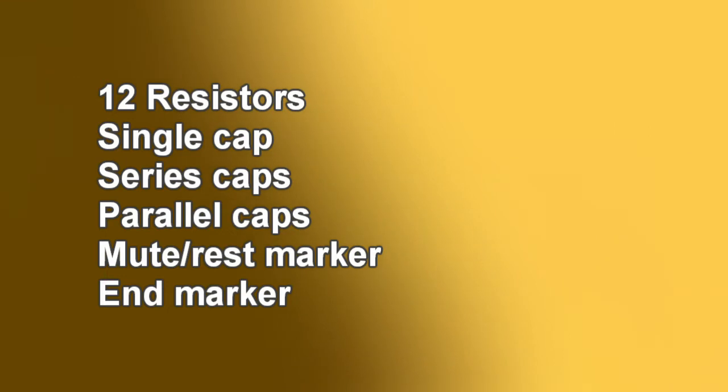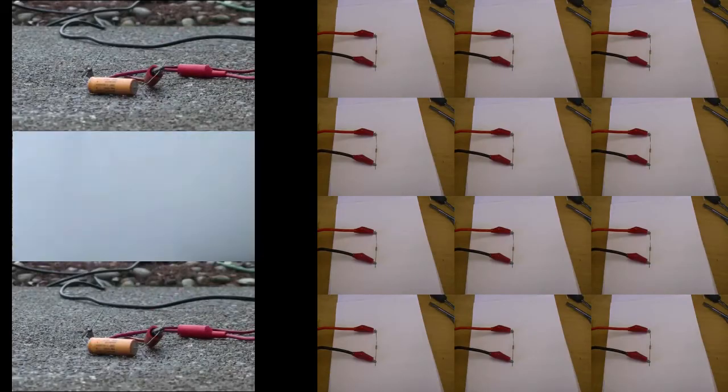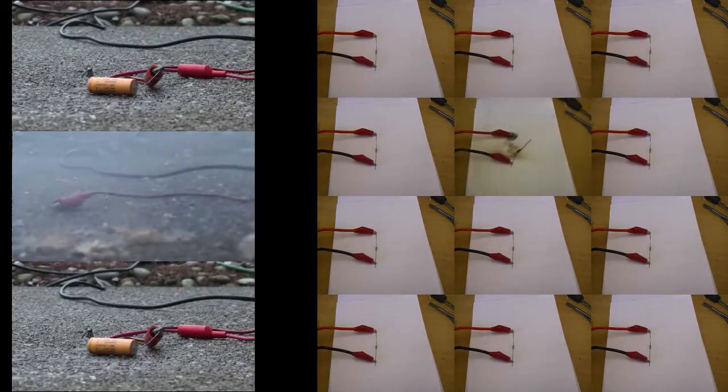That leaves the question of how to store notes on the data bus. Between the resistors, capacitors, and some other things, there are 17 total input wires, but only 8 wires on the data bus. However, since we're only supposed to select one capacitor and one resistor at a time, this can be reduced.